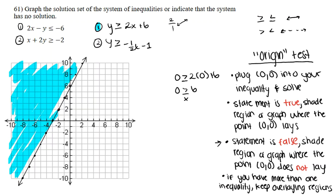Now let's graph the second inequality. The y-intercept is negative 1, so that's where we start. The slope is negative one-half, meaning the line drops to the right — rise 1 over 2. We plot points going up 1 and over 2, or down 1 and over 2, to complete the line. Since it's also a greater than or equal to inequality, we draw another solid line.